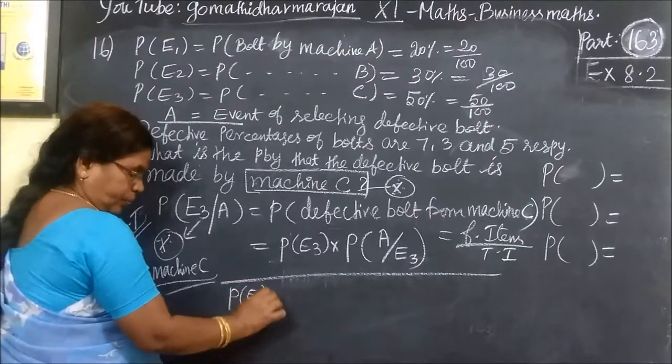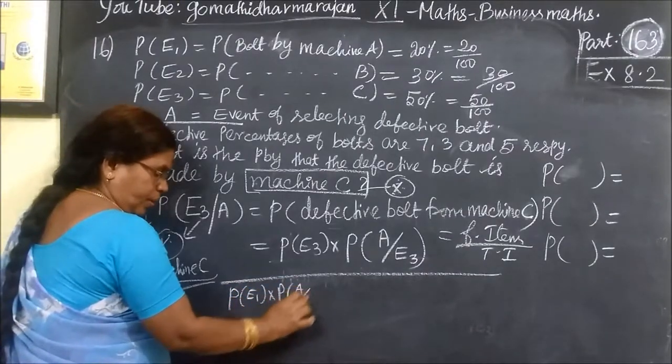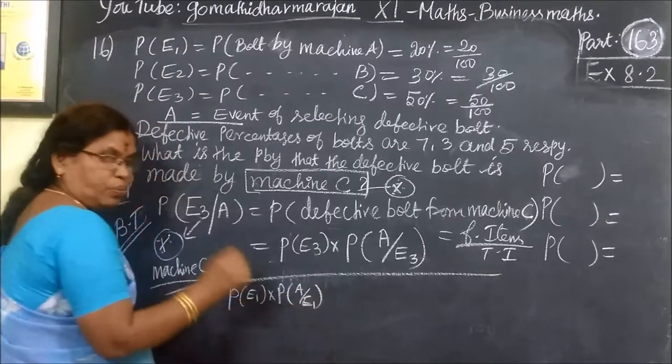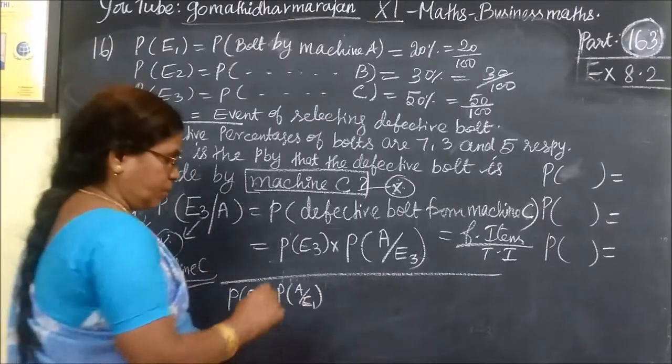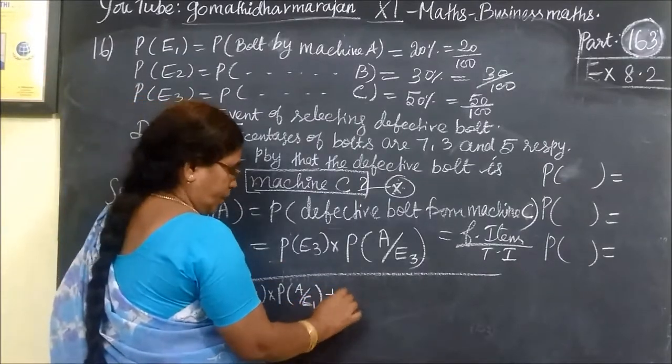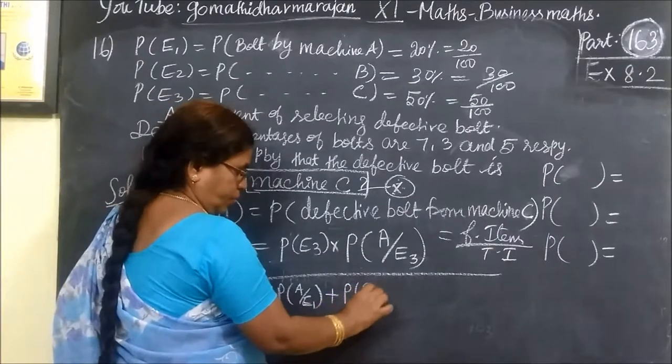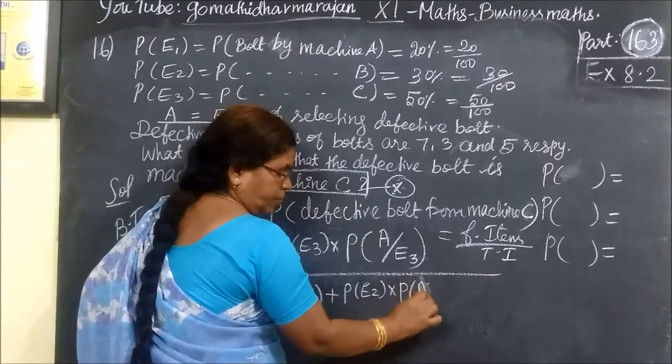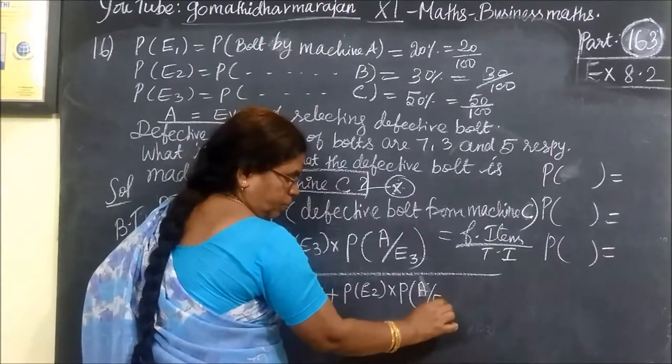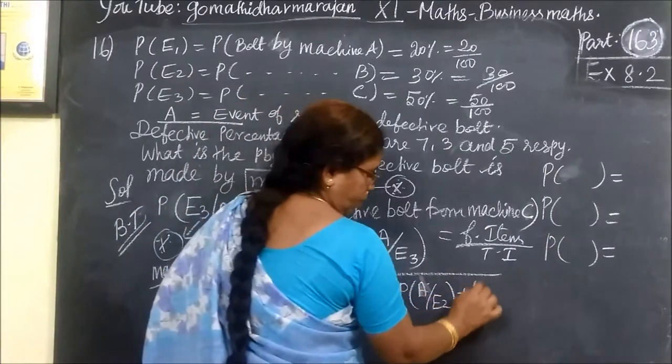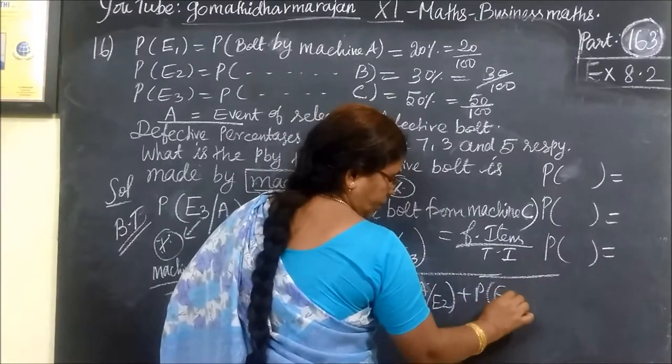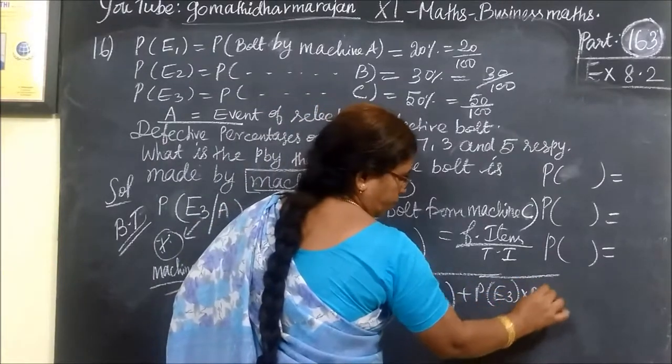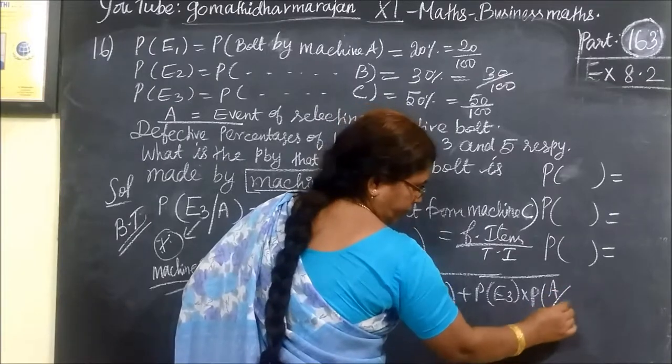E1, we get A from E1, defective bolt from machine A. Then P of E2 into P of defective bolt from machine B. Then P of E3 into P of A from E3.